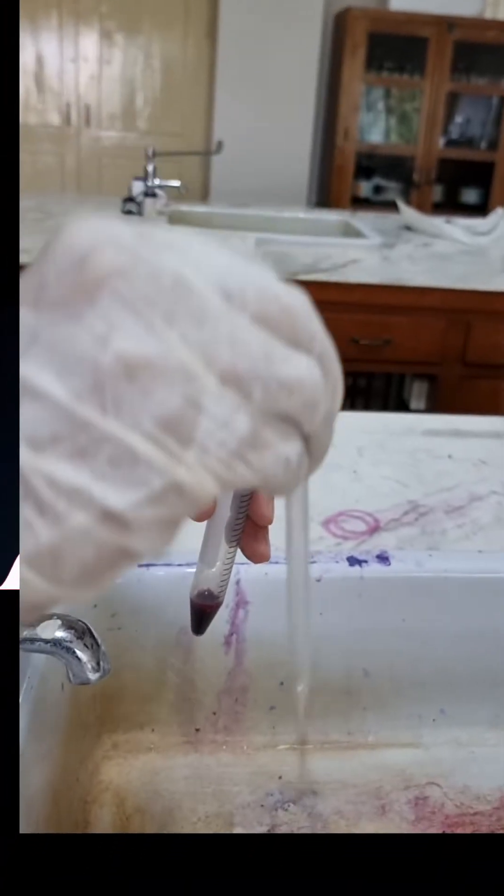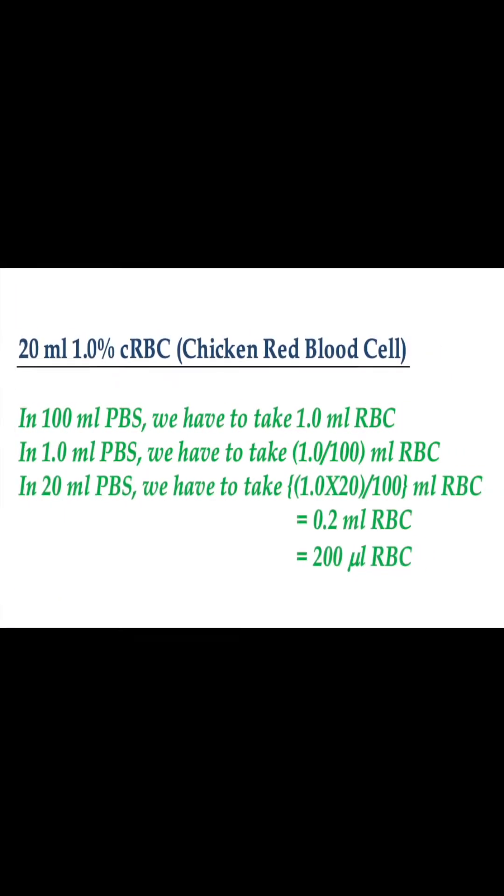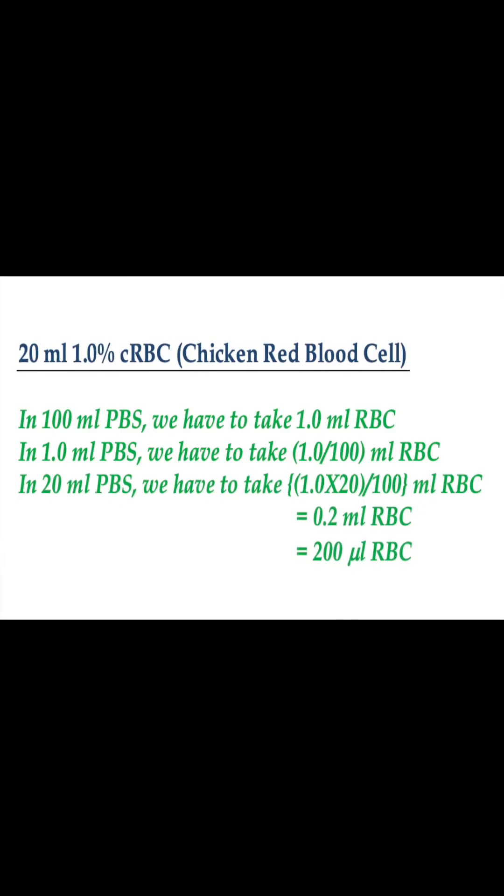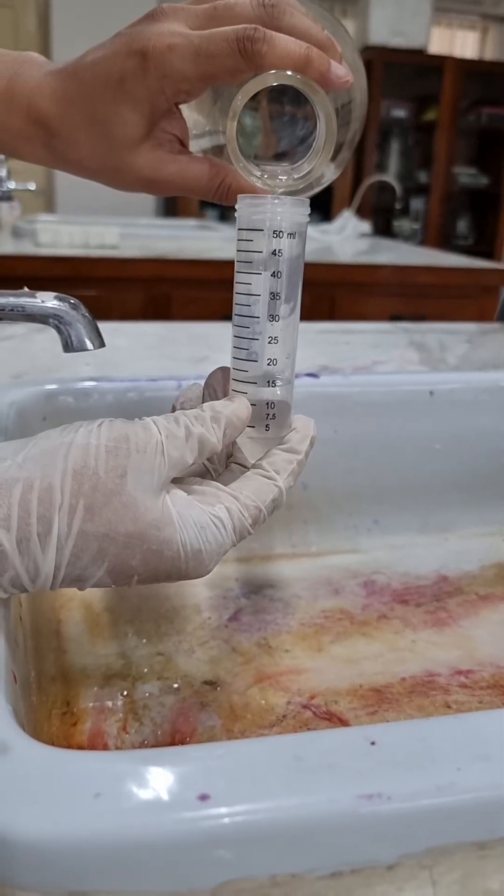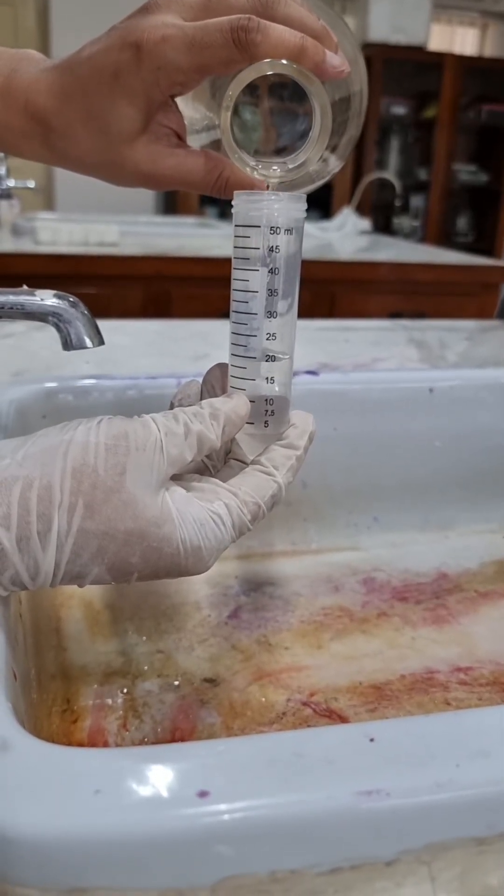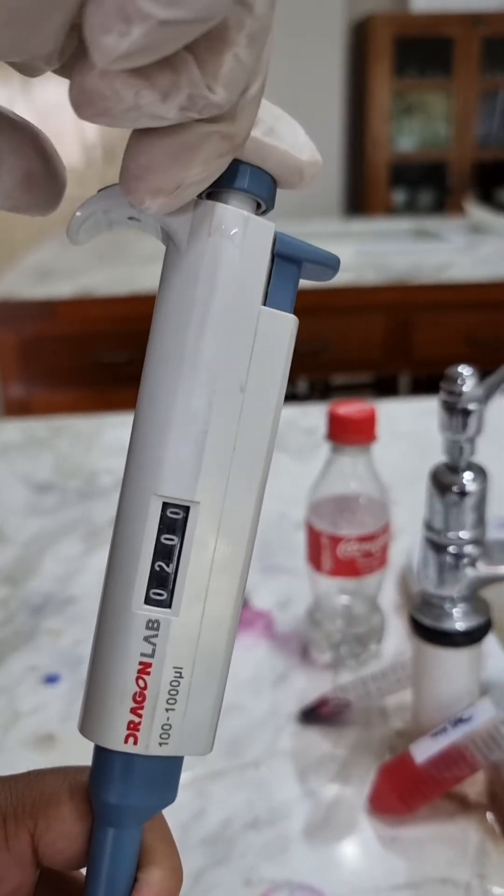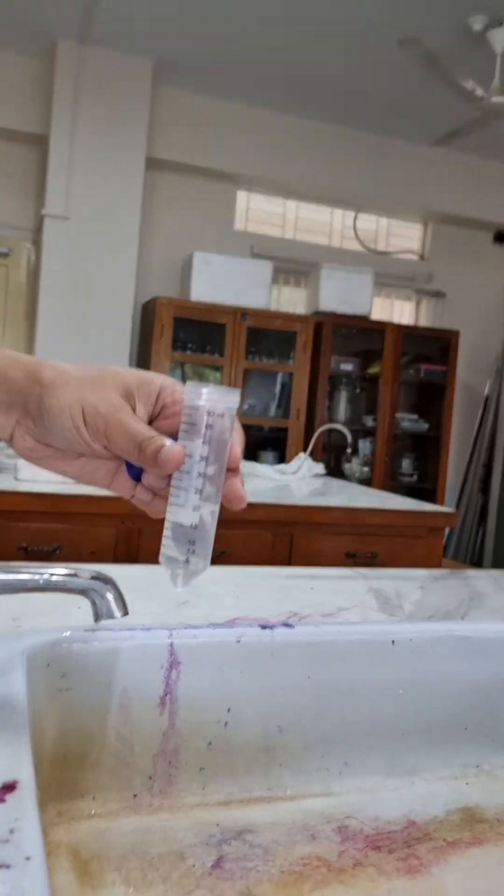Finally, this is the washed RBC that we are looking for. To make 20 ml one percent chicken RBC, we have to take 19.8 ml PBS and 0.2 ml RBC. To make things easier, we are taking 20 ml PBS from which we will discard 200 microliters of PBS to make room for 200 microliters of RBC.